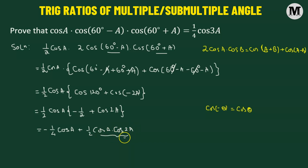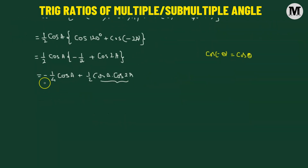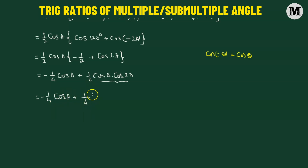Now again we have a product of two cosine functions, so again we'll apply this particular formula. However, we have the factor 2 missing — that's not a big issue, all we have to do is multiply by 2 and divide by 2. So we get negative one quarter of cosine of angle A, and the second term becomes one quarter — multiplying numerator by 4 — giving us 2 times cosine of angle A times cosine of angle 2A.